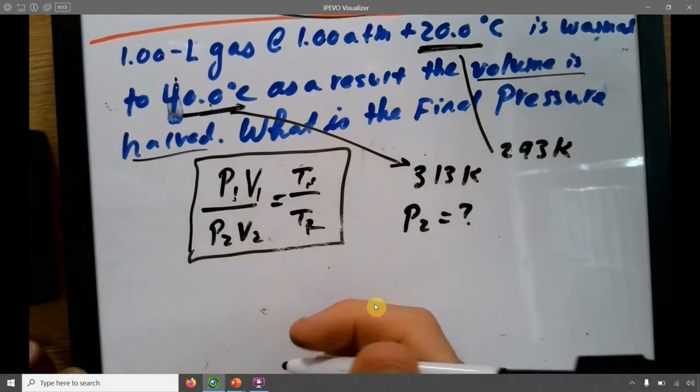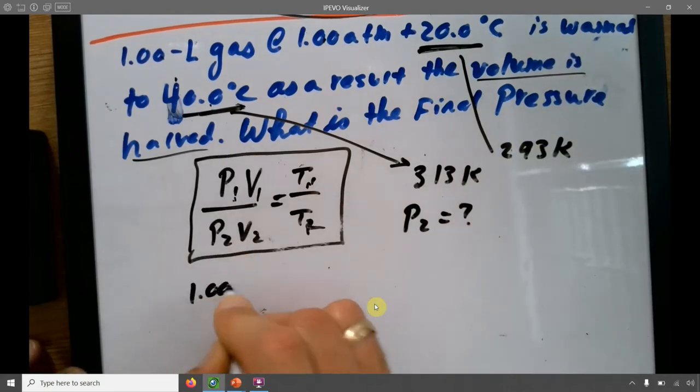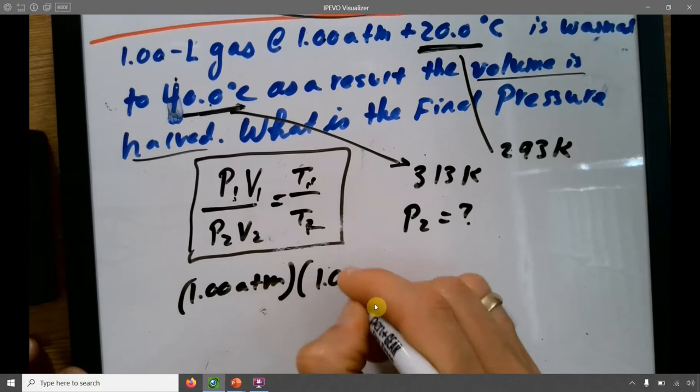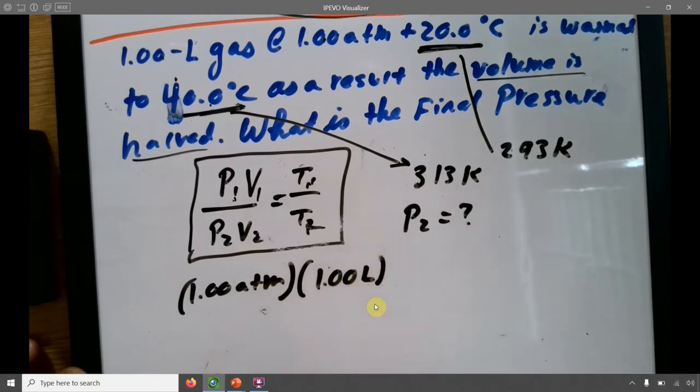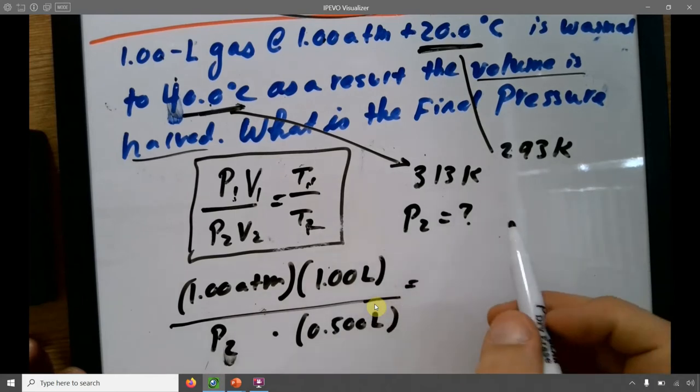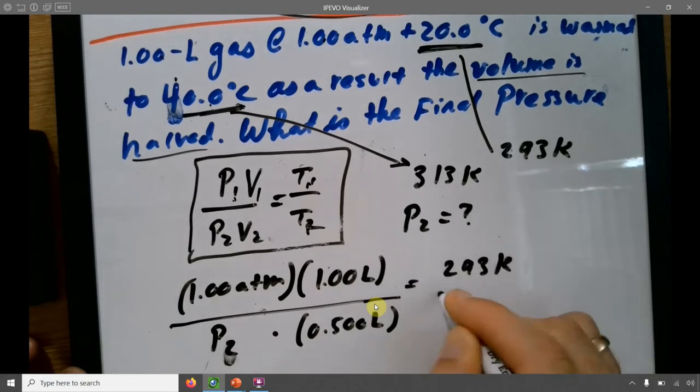So let's substitute in. So P1 here is 1.00 ATM. Again, I know I'm going super, super slowly. I'm doing this on purpose so that you feel comfortable later to do it yourselves without any problem. So P1 times V1 divided by... I don't have P2. And V2 is a half of the original volume. So it's just 0.500 liter. Make sure that the same number of sig figs shows up. Otherwise, you may mess it up with sig figs analysis. All right. Great. My initial temperature was 293K. And my final temperature is 313K.